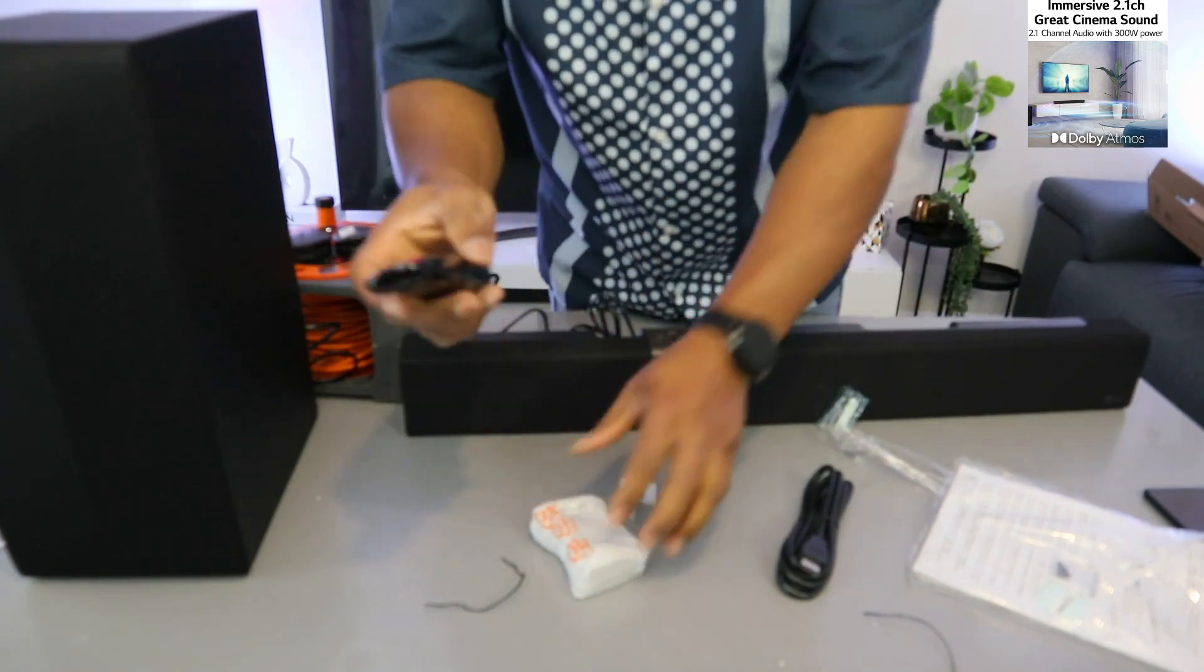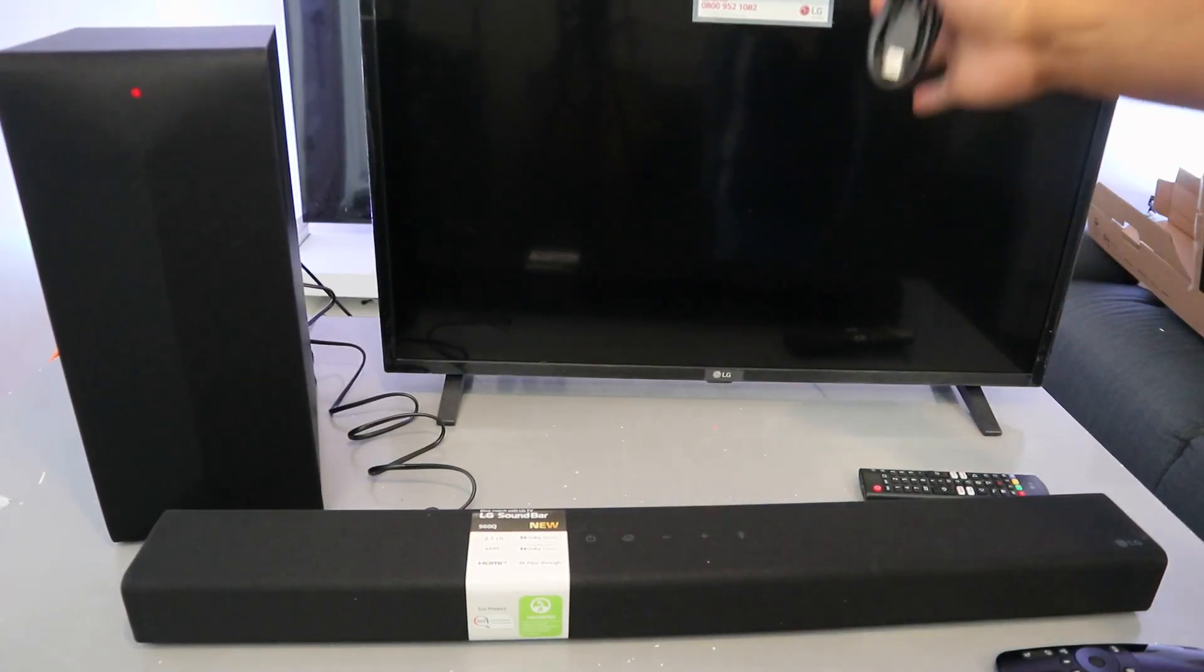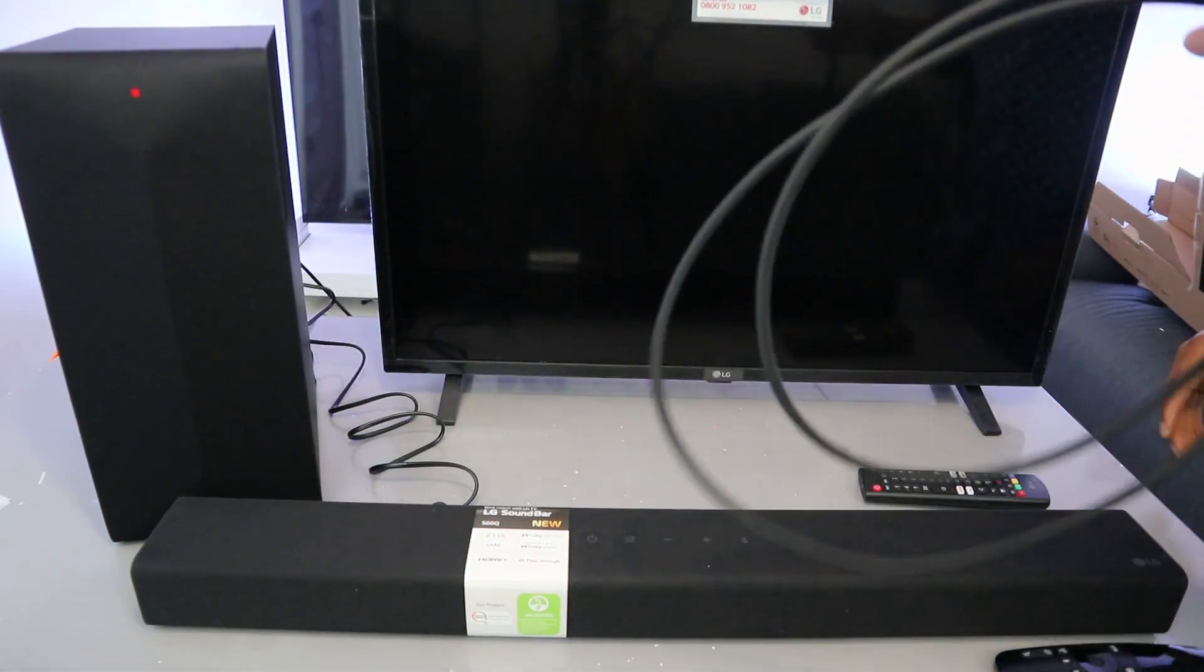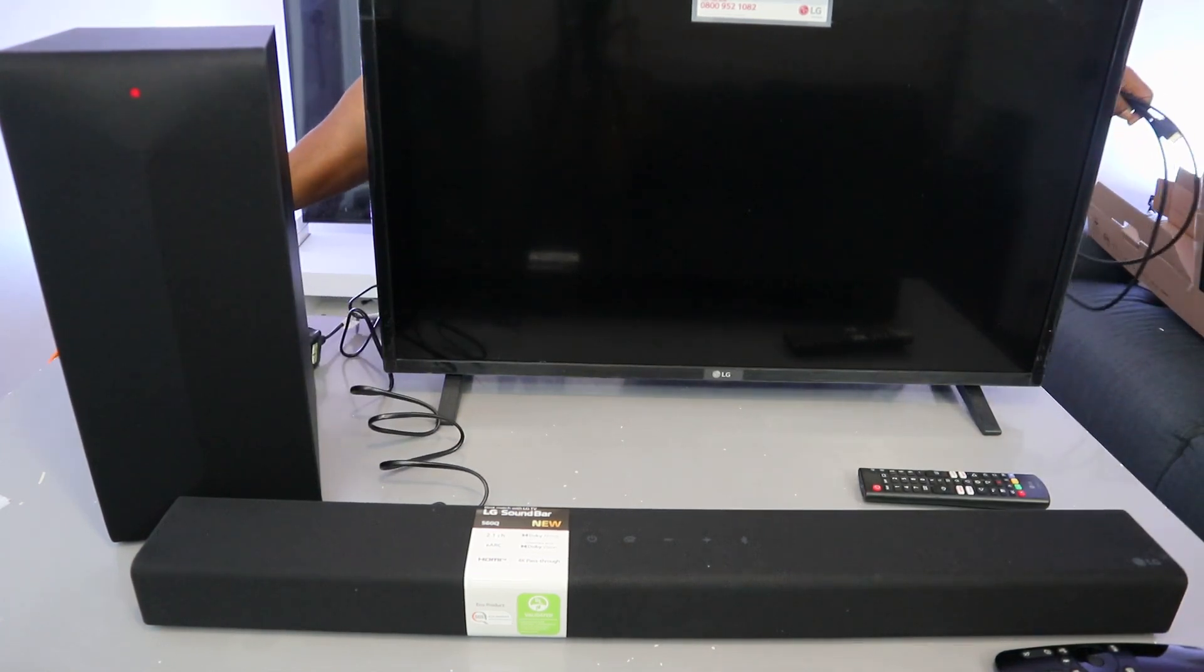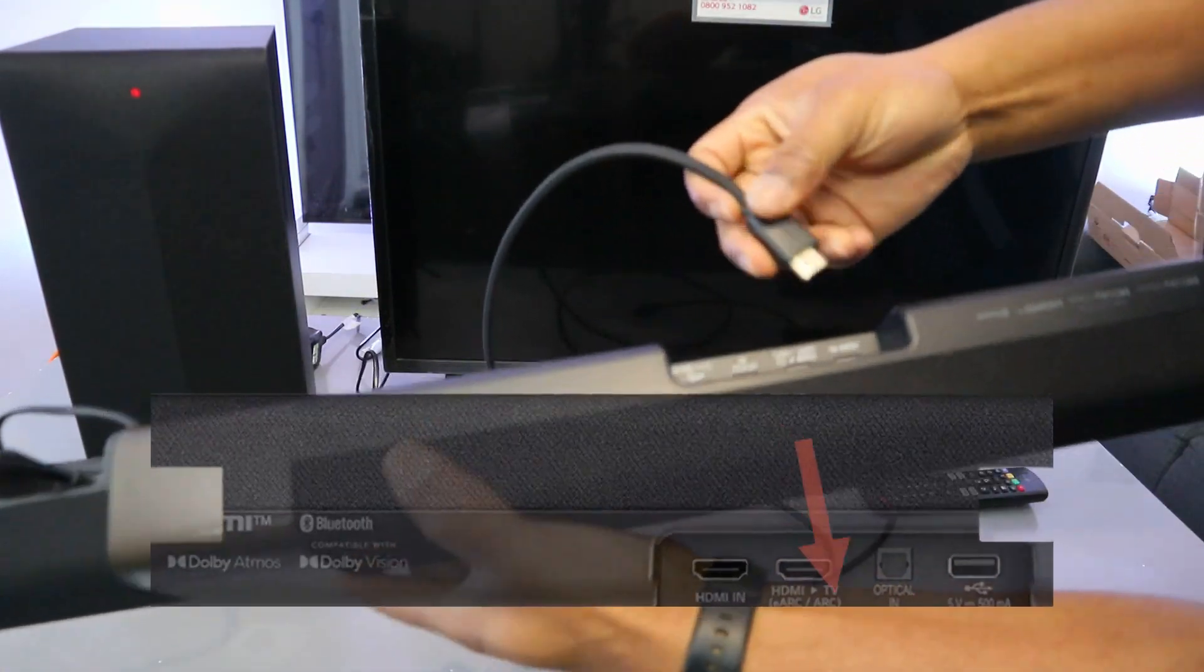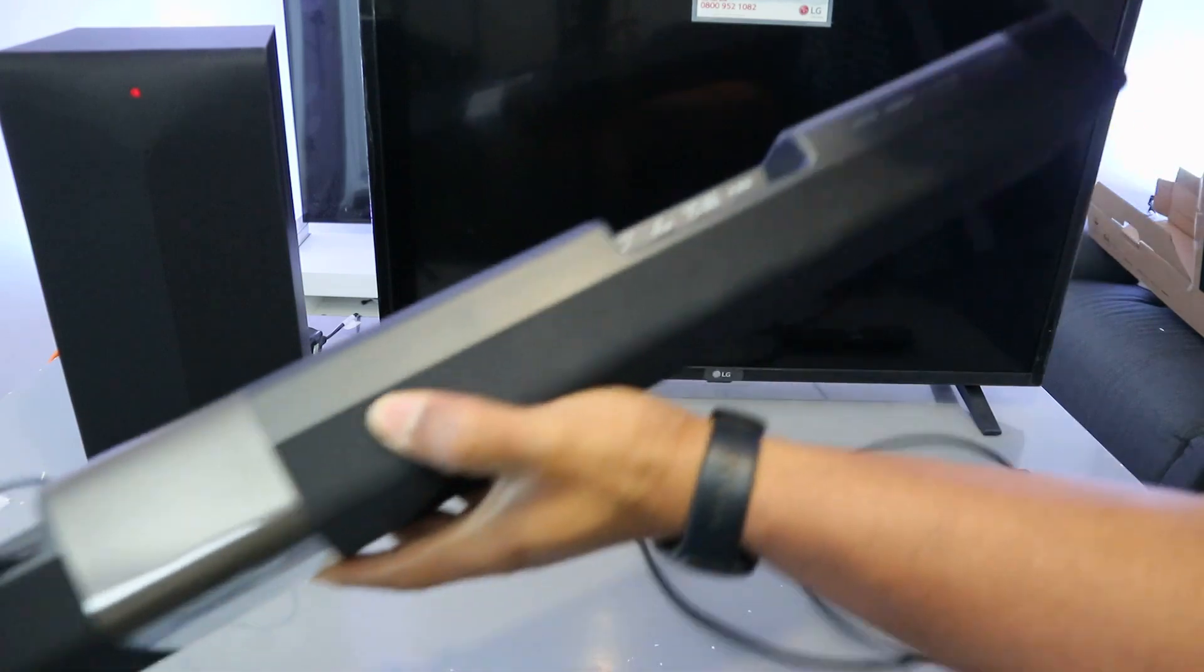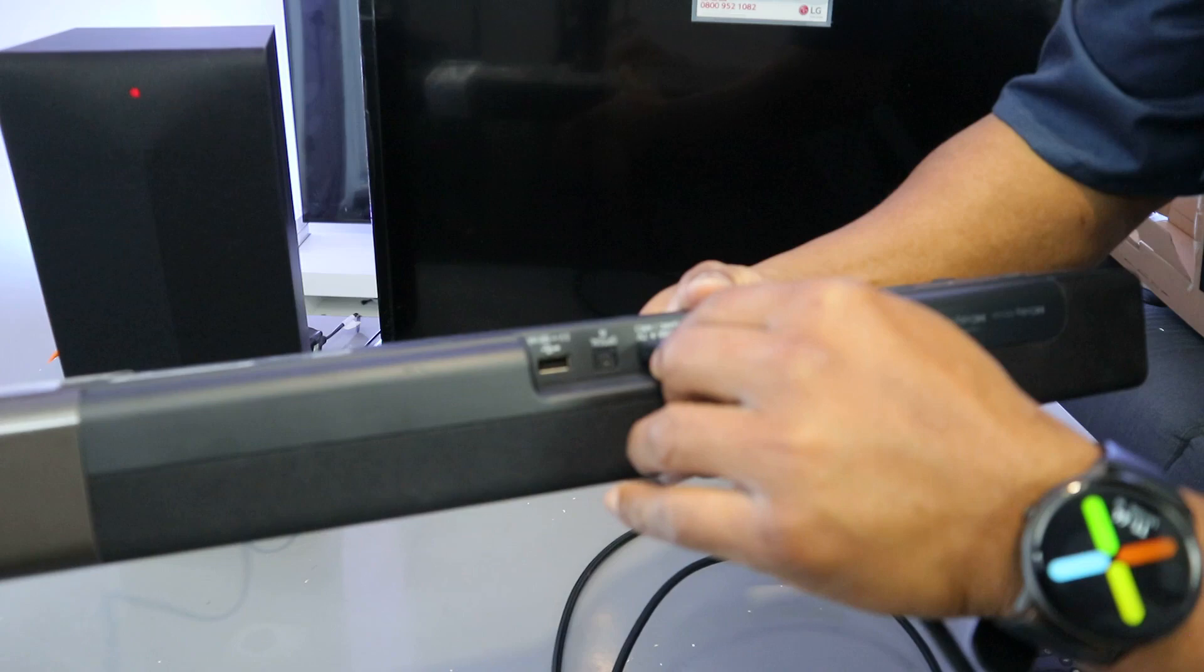I'm going to show you how to connect this soundbar to TV using HDMI cable. HDMI cable is included in the packaging. Unplug the soundbar, unplug everything. Go to the soundbar where it's written HDMI TV eARC, so push the cable to HDMI TV eARC.